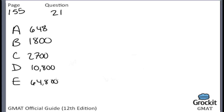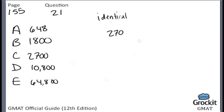Running at the same constant rate, six identical machines can produce a total of 270 bottles per minute. At this rate, how many bottles could 10 such machines produce in four minutes? The key here is that the machines are identical. This means we don't have to use the work formula — we can simply divide this rate of 270 bottles per minute evenly by six to figure out the rate per machine. 270 divided by six equals 45 bottles per minute per machine.